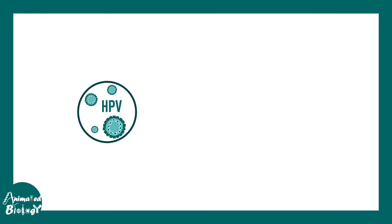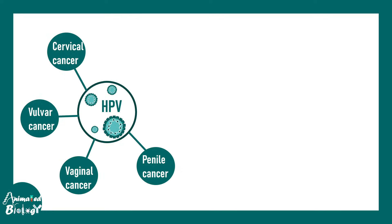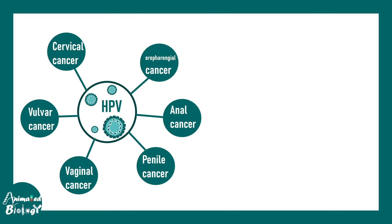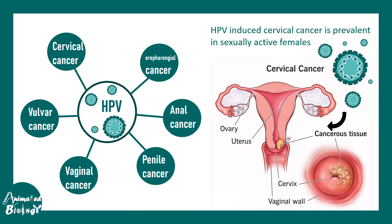Uncontrolled cell cycle progression eventually leads to cancer. HPV is associated with several cancers; among the most common are cervical cancer, vulvar cancer, vaginal cancer, penile cancer, anal cancer, and oropharyngeal cancer. Cervical cancer is the most common, and certain serotypes of HPV are responsible for it.